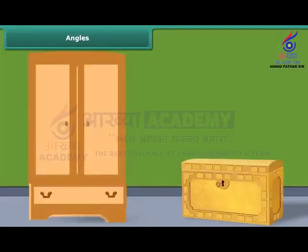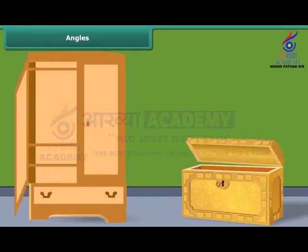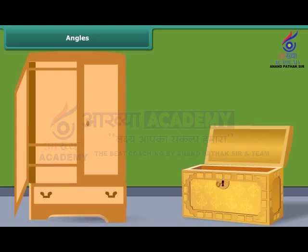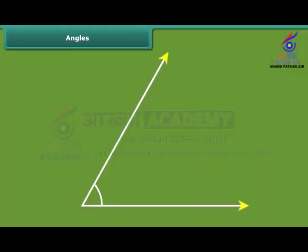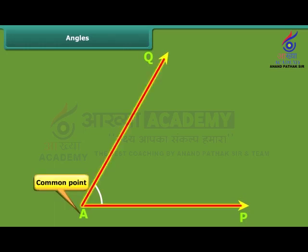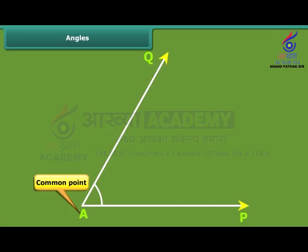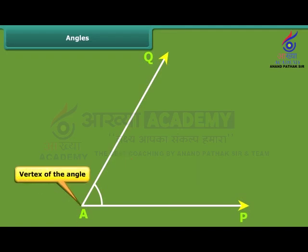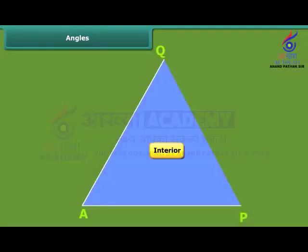The open door of an almirah or a box forms an angle. In the language of mathematics, when two rays start from a common point, we say that an angle is formed. In the given angle, ray AP and ray AQ have a common point A. The two rays forming an angle are called the arms or sides of the angle. The common end point is the vertex of the angle. The angle is named as angle PAQ — note that the vertex specifying the angle is written as the middle letter. The interior and exterior of the angle are denoted by different colours in the figure.